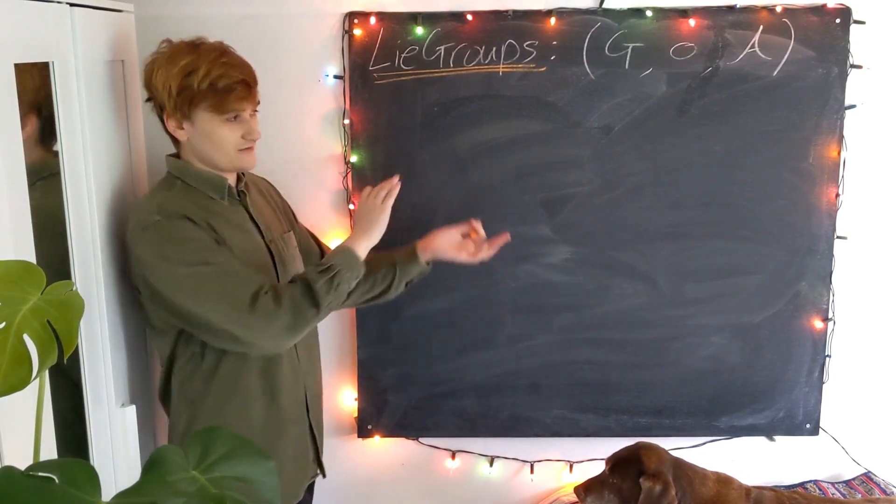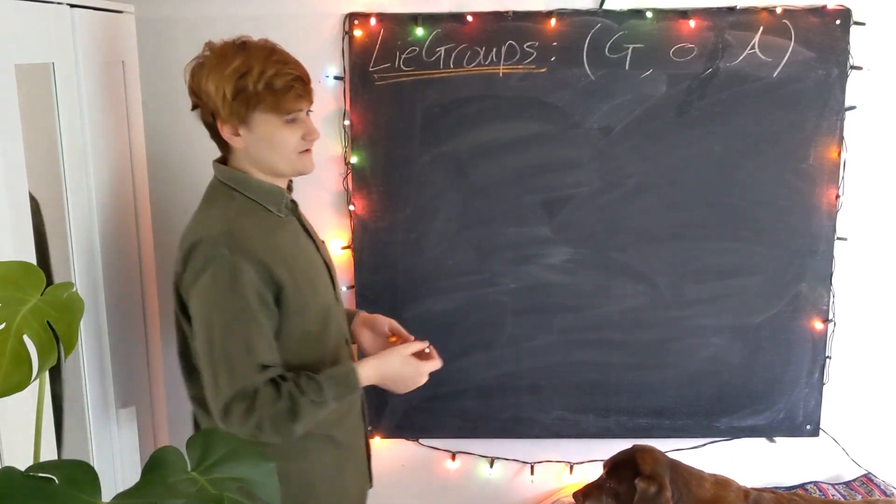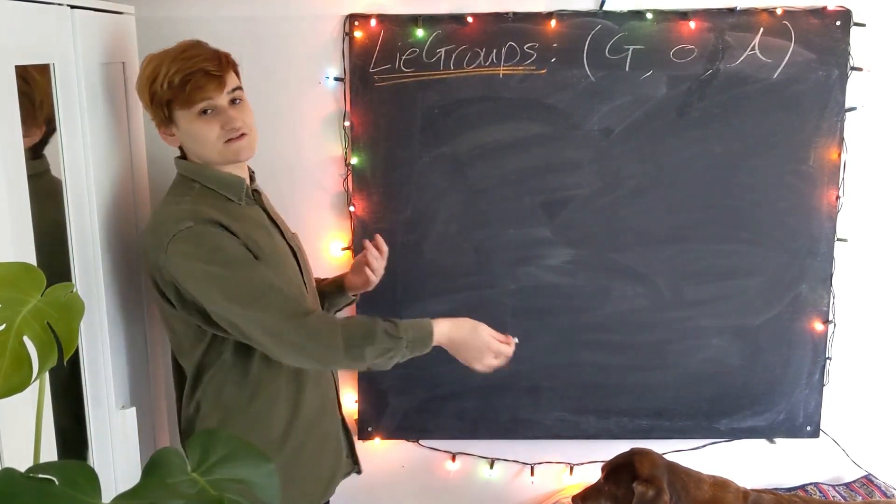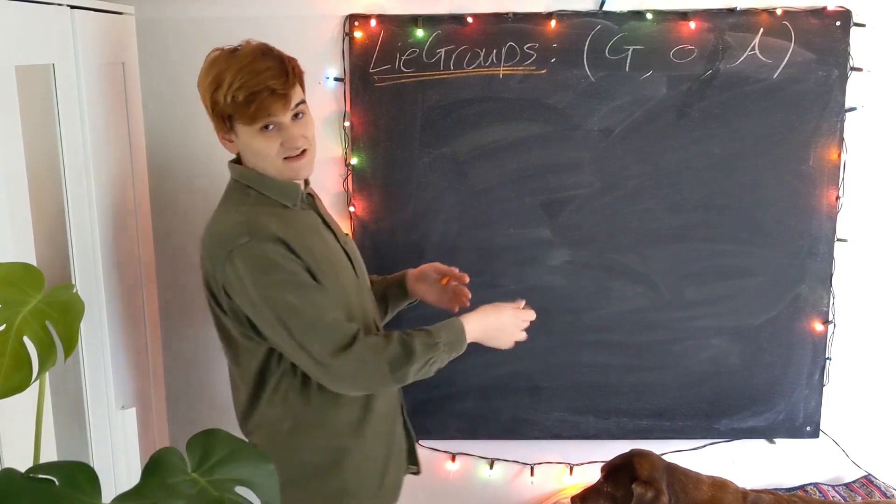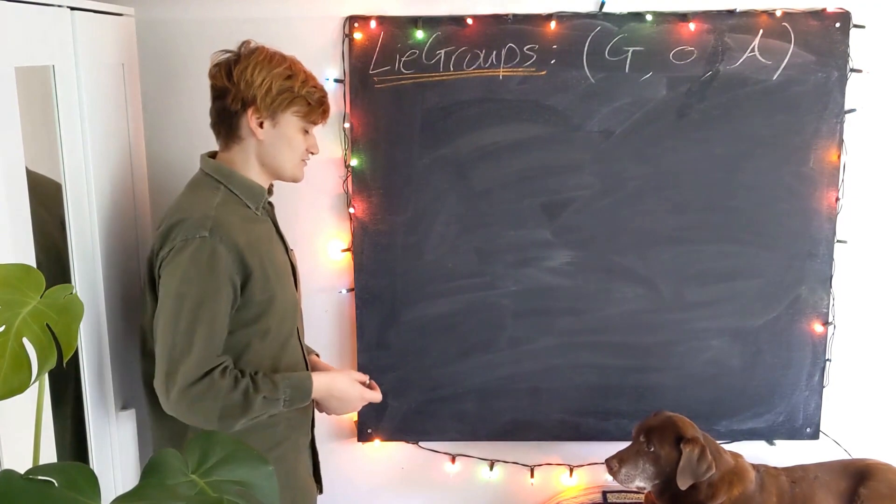A Lie group is just a group that is also a manifold, and we're going to see that this kind of structure allows us to talk about lots of geometric properties of these Lie groups, and they're going to be heavily related to symmetry, as we're going to see shortly.